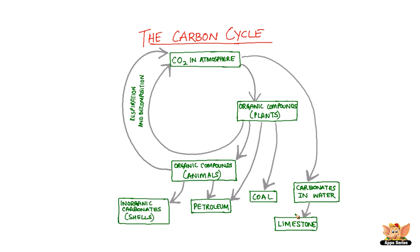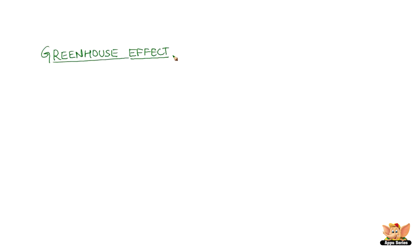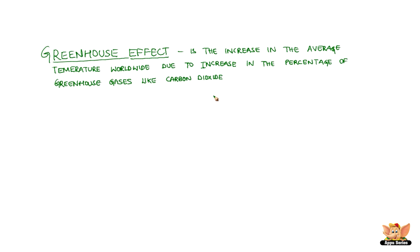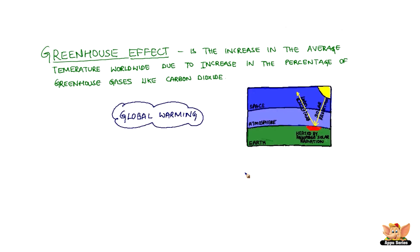The carbon dioxide released into the atmosphere re-enters the carbon cycle. One phenomenon to be noted in this context is the greenhouse effect. One reason for this being large-scale burning of fossil fuels. The carbon dioxide thus released gets trapped in the atmosphere, increasing the temperature. Greenhouse effect is the increase in the average temperature worldwide due to increase in the percentage of greenhouse gases like carbon dioxide. The effect of this has led to global warming.